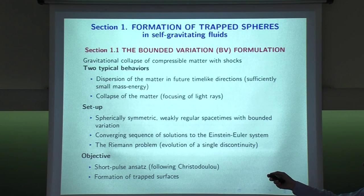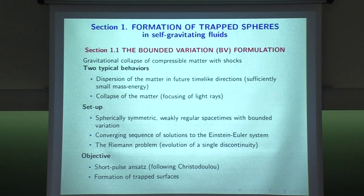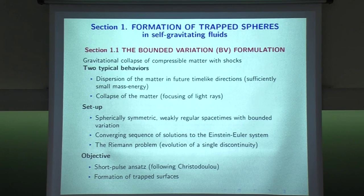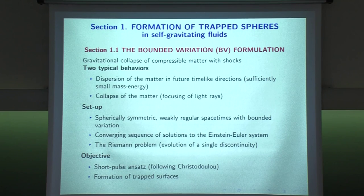One possible feature of the dynamics is collapse; the other possibility is that if you have some matter initially it will disperse in time-like directions. That will occur if the mass is effectively small — if the mass is small it will disperse. If the mass is bigger, then you will get a collapse of matter. I'm going to focus on the second situation, with the setup of spherical symmetry and BV regularity.